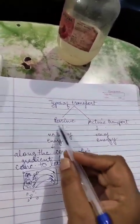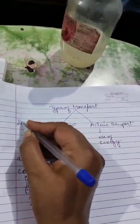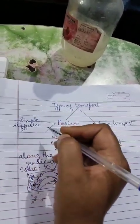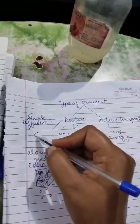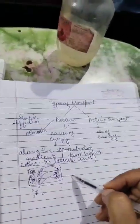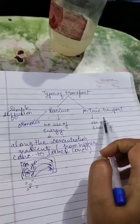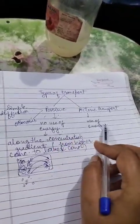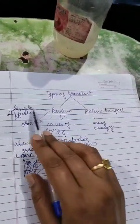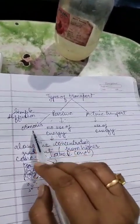Now, passive transport — yeh bhi kitne types ka hota hai? Two types: first is simple diffusion and the second one is osmosis. So we are studying about passive transport first. Passive has two types: simple diffusion and osmosis. We will study about these two first.